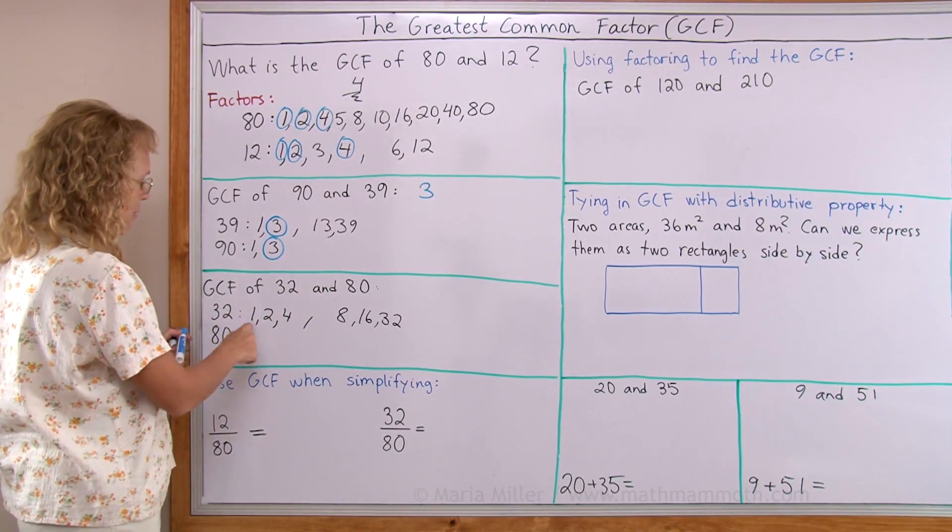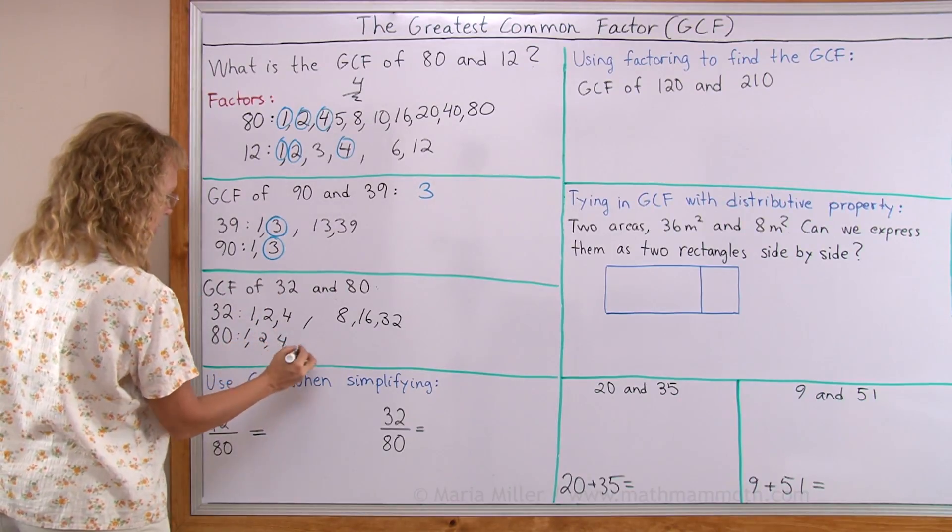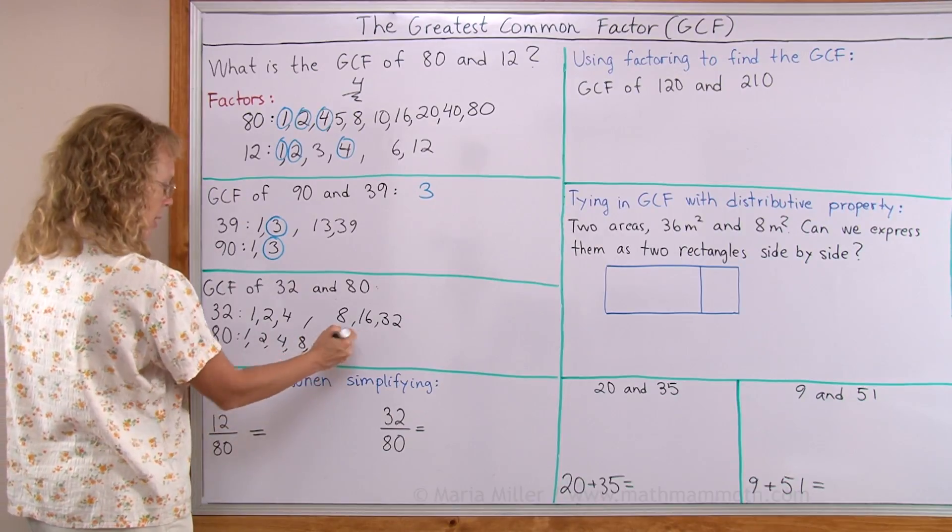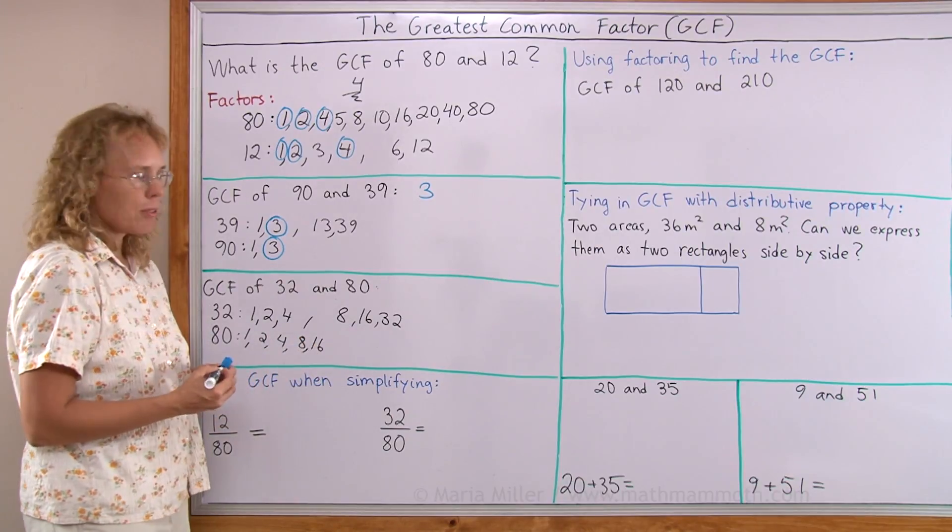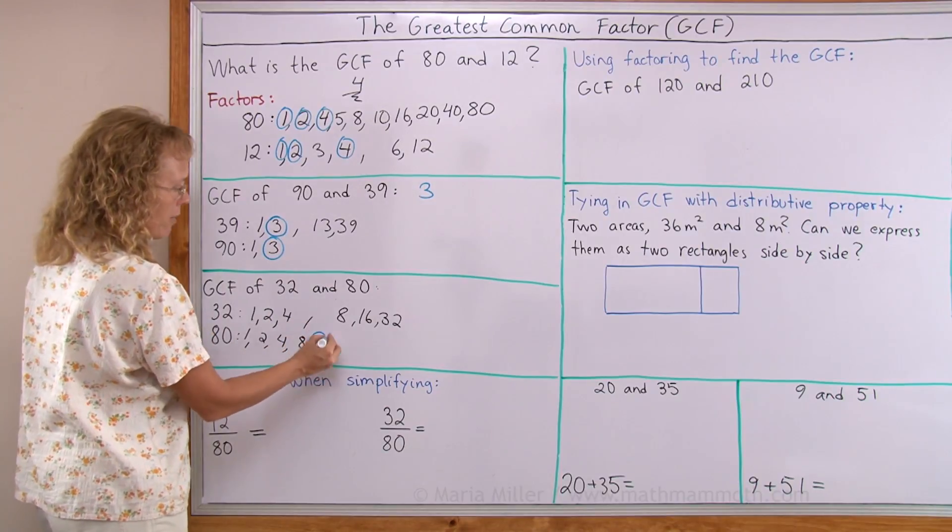And then, which one of these are also factors of 80? 1 is, 2 is, 4 is, 8 is, 16 is, because it's 16 times 5. 32 is not. So greatest common factor is 16.